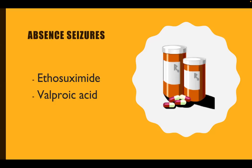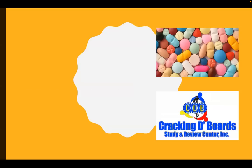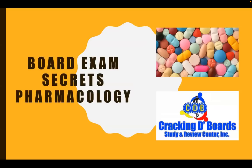What is the drug of choice for absence seizures? We usually give ethosuximide. The alternative drug is valproic acid. Valproic acid is teratogenic — it can cause neural tube defects. Therefore, in a woman who is pregnant or desires to be pregnant, you should stop the valproic acid. This ends our very quick Board Exam Secrets pharmacology session. God bless everyone and good luck. This is Dr. Toom, the Master Guru.